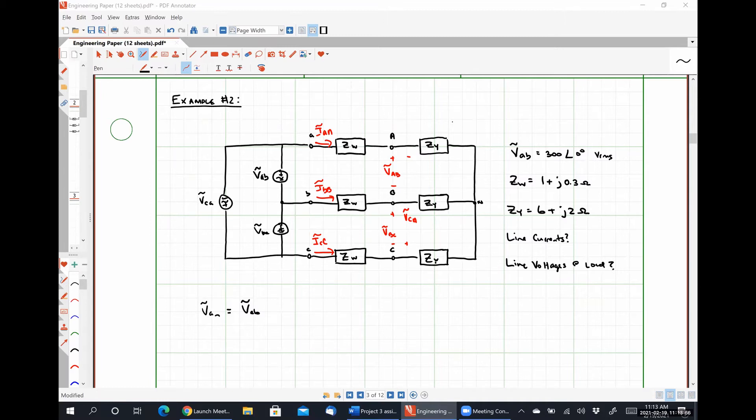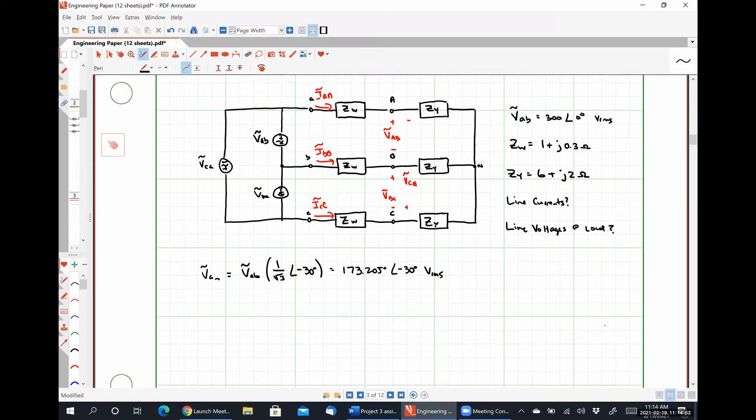So if you look back at your notes that we defined for doing the source transformations between a delta and a Y, all we have to do here is take our delta voltage VAB and multiply by one over root three, angle negative 30 degrees. And this gives us our Y voltage, which in this case is going to be 173.205 with an angle of negative 30 degrees volts RMS. And with just this one voltage, we have all the information that we need to determine everything else.